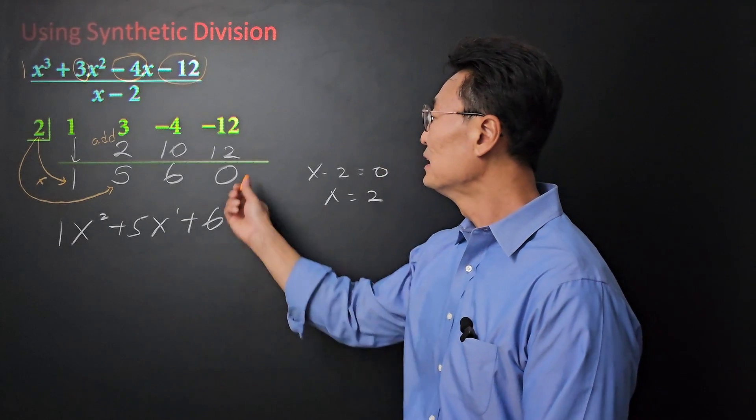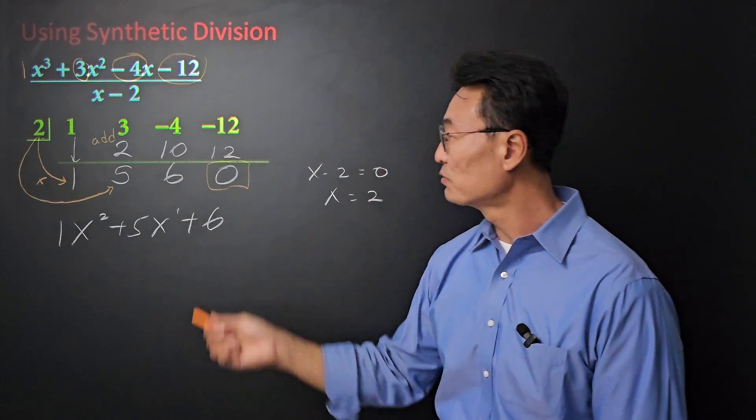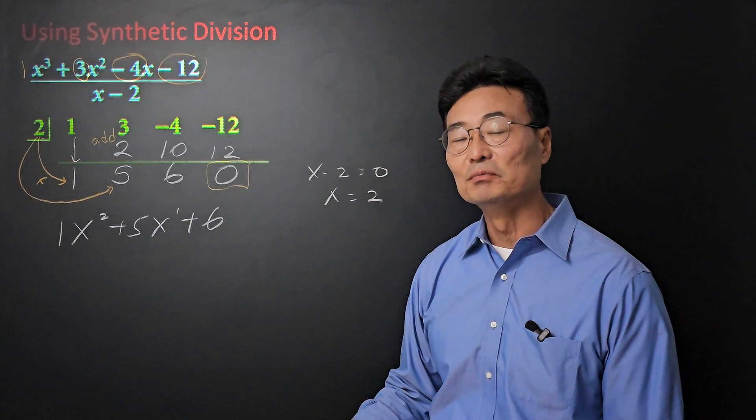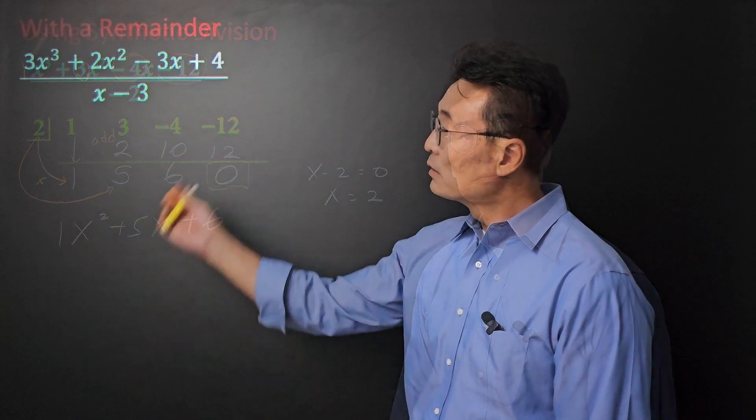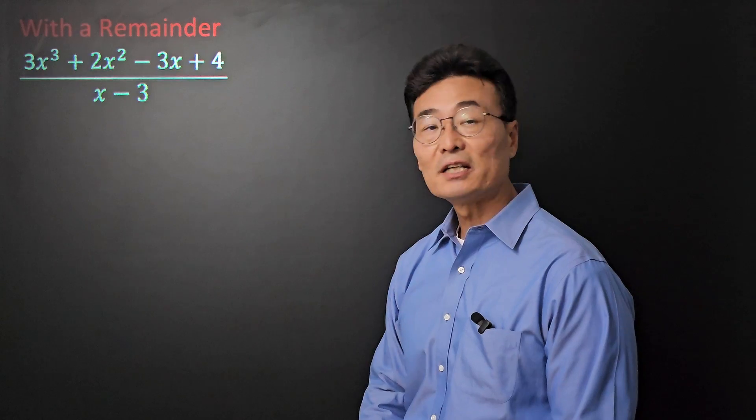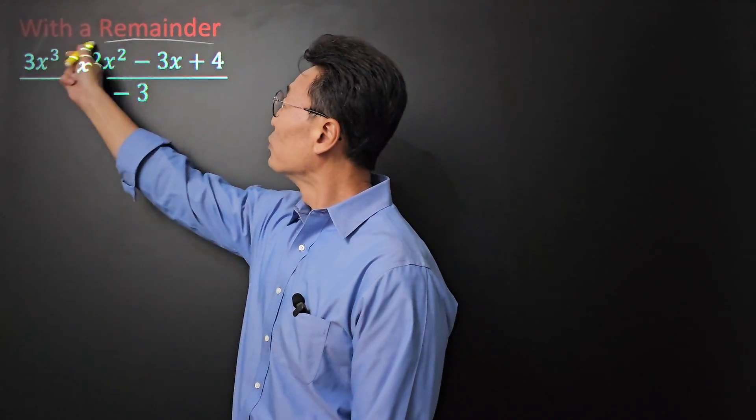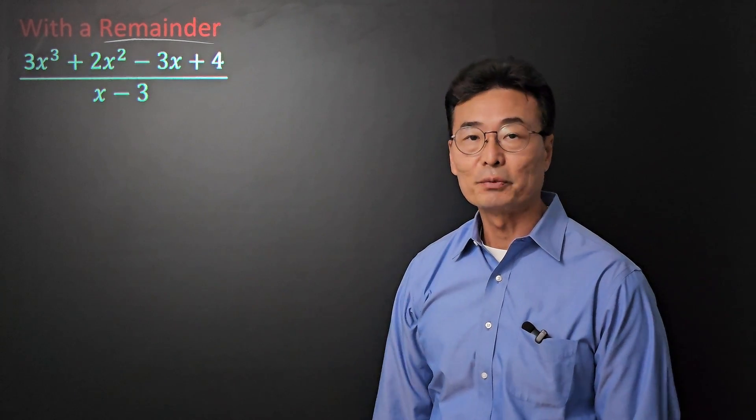One thing I want you to see is that the remainder for this one was 0. The question is, what if the remainder is not 0, then what do you do? Let me show you in the next example.